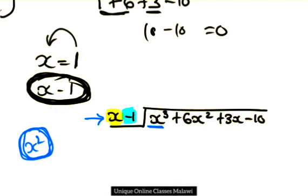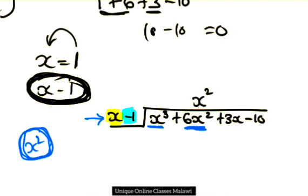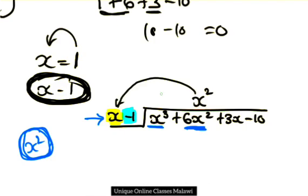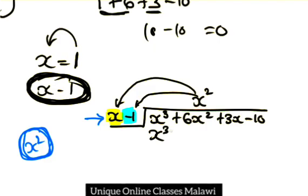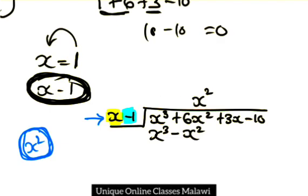So if I take x cubed and divide by x, I get x squared. X squared times x gives x cubed, and x squared times minus 1 gives minus x squared.